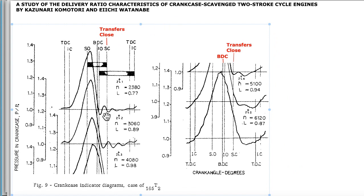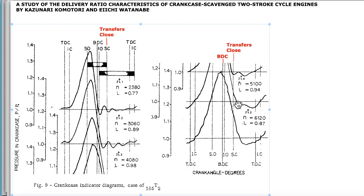This graph from this research paper shows that at different RPM, the crankcase pressure reaches zero — which is the 1.0 line — at different crank angles. At 1,000 RPM, it happens just before bottom dead center. At 2,500 RPM and 4,000 RPM, it happens progressively later after bottom dead center, a little more each time, right up to or even after transfer closing.